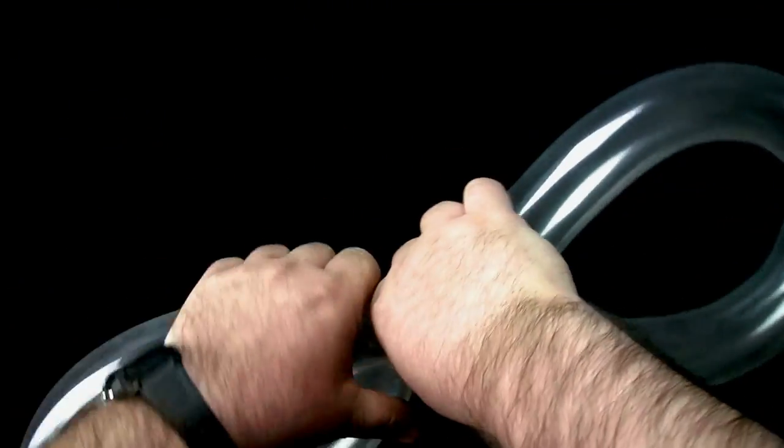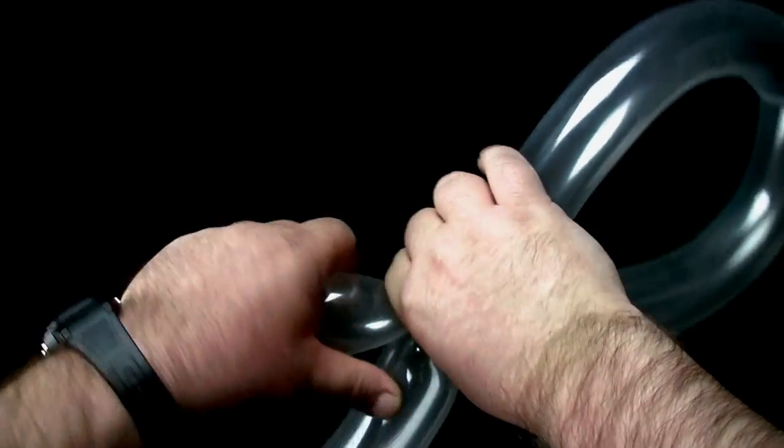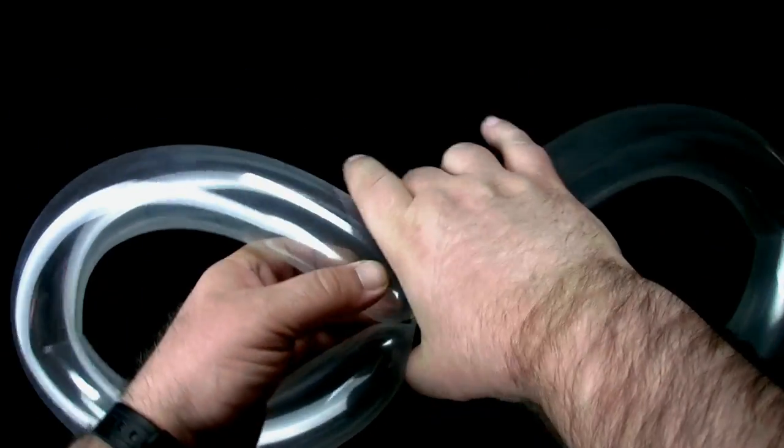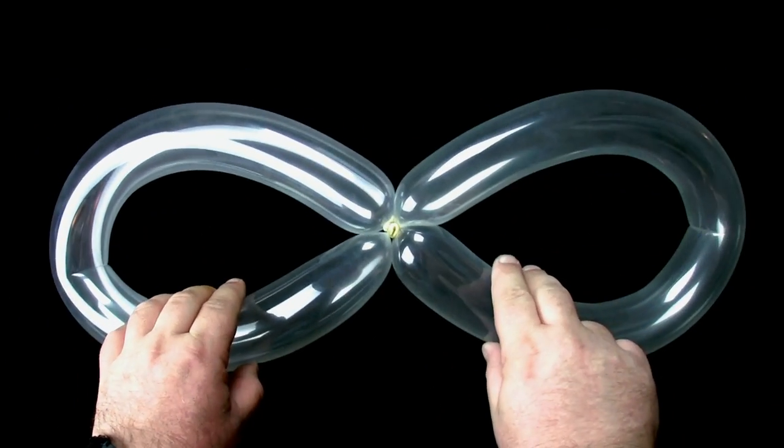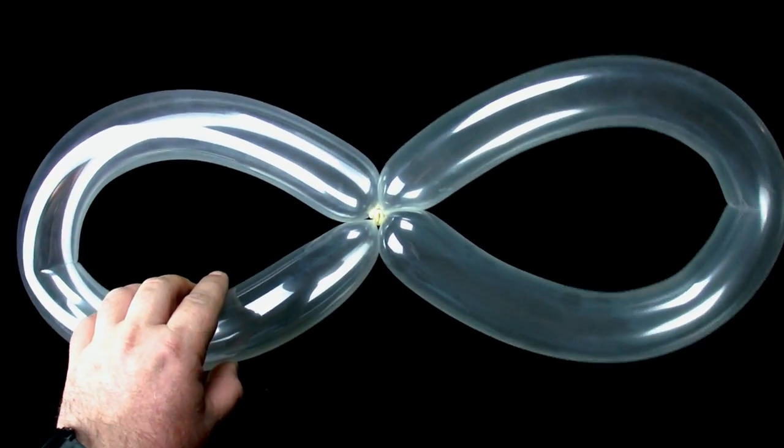Twist one of the loops. This will be the bee's wings. Set this aside to work on the 321 balloon.